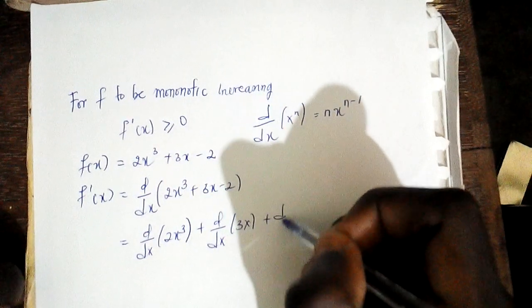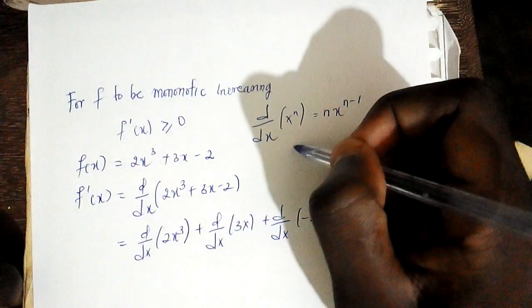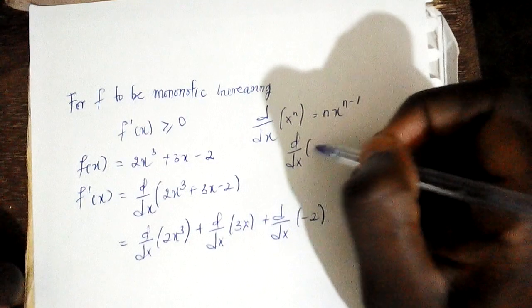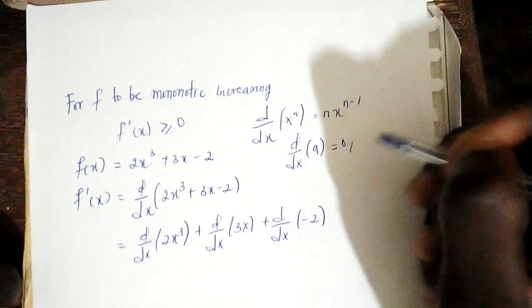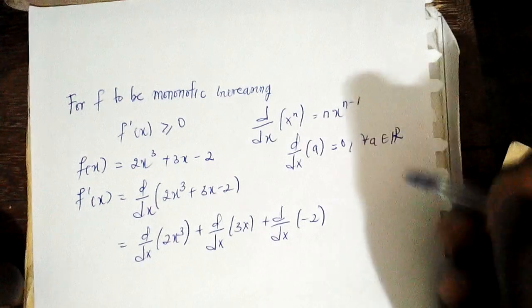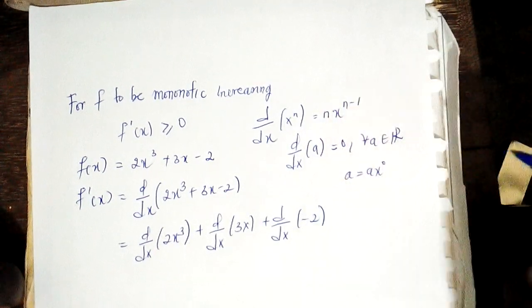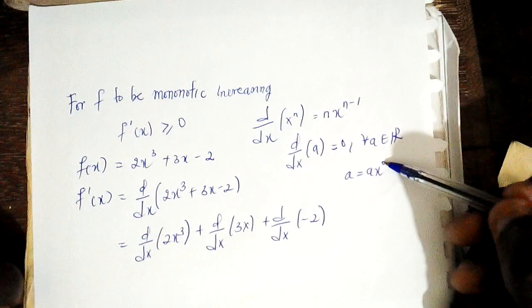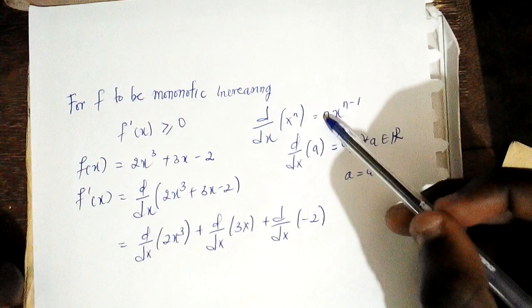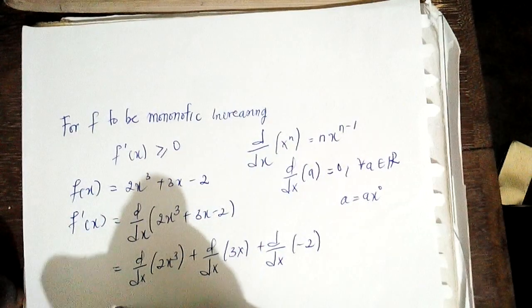Whenever I differentiate a constant with respect to x, I get 0. For a in the set of real numbers, the constant a can be written as a·x^0. When you differentiate, the power is 0, so when you drop the power, n becomes 0 and multiplies with anything to get 0.